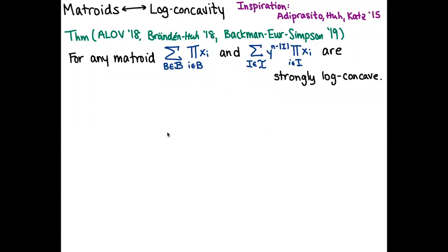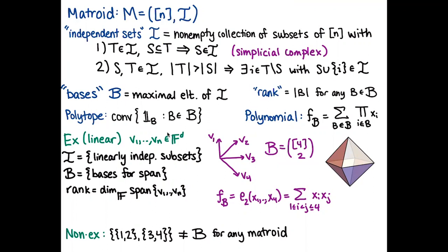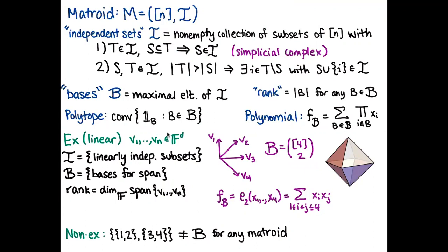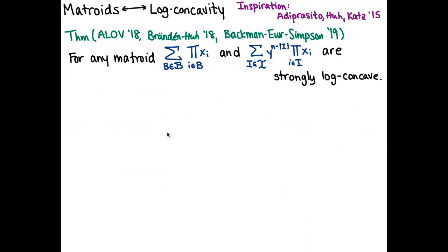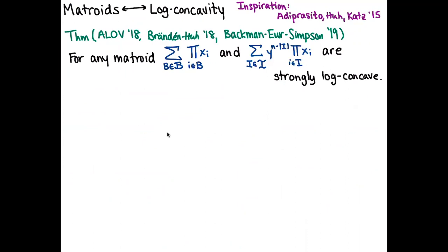To clarify: n is the number of variables and the size of the ground set of the matroid. The degree of the polynomial matches the rank of the matroid, since the degree equals the size of a basis. In our running example, the matroid was on four elements with rank two, corresponding to a polynomial in four variables of degree two. For the independent-set polynomial, we just add one extra variable to homogenize.